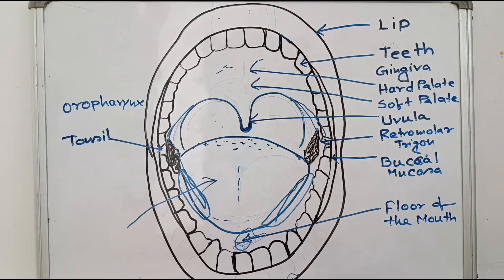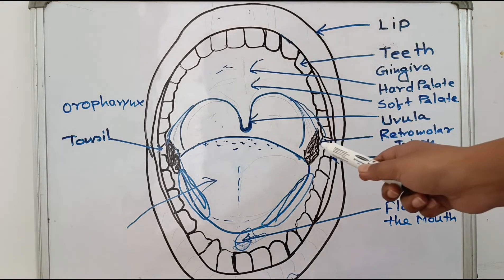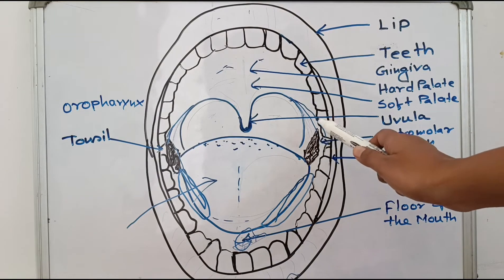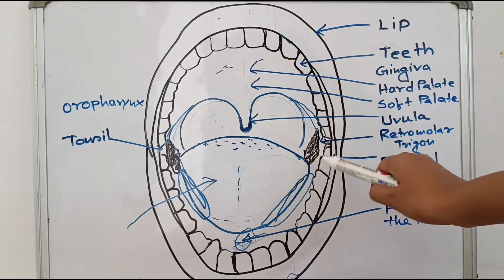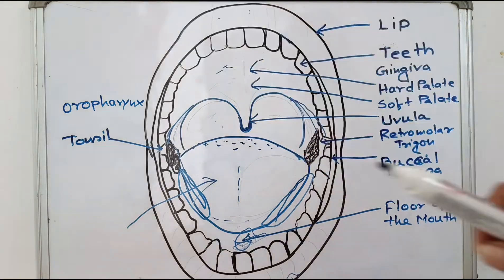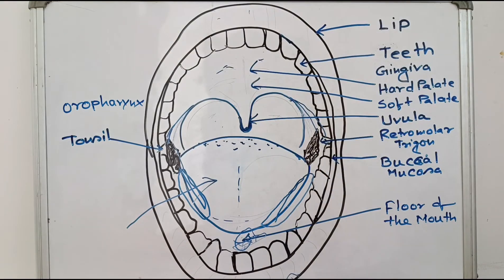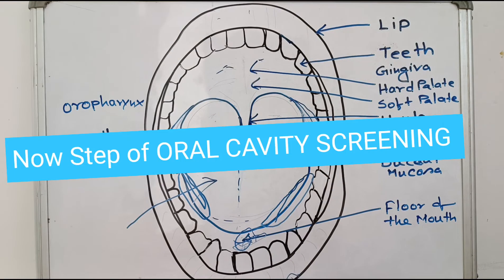The tonsil is also very important in the human body. Check for any tonsil swelling or any growth — very important pathological conditions can develop here. That covers the anatomy of the oral cavity.